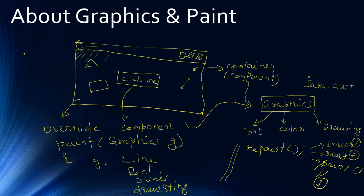There is one more method to discuss: you can make a call to getGraphics to get the graphics object associated with your component. For example, if you make a call to getGraphics on the frame window, the graphics object associated with that frame window will be returned. Similarly, if you call getGraphics on the button, the graphics object associated with that button will be returned.